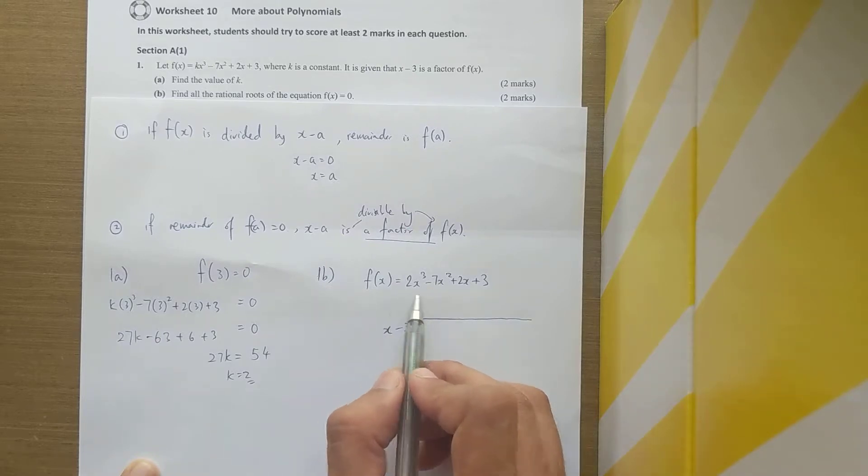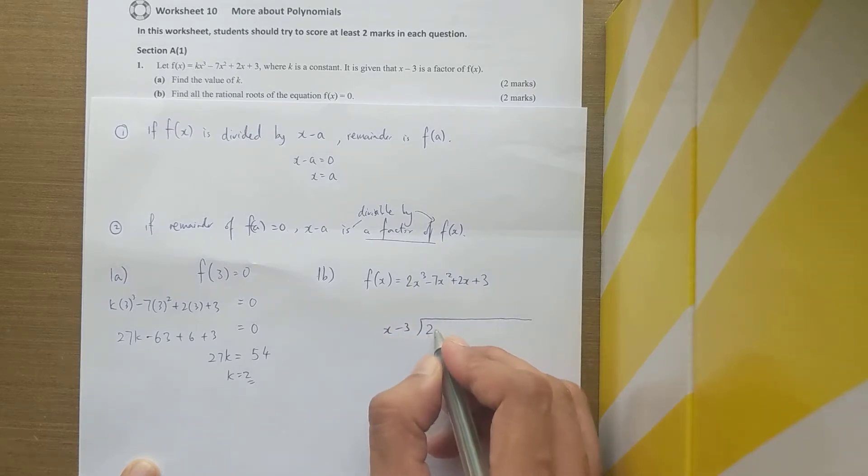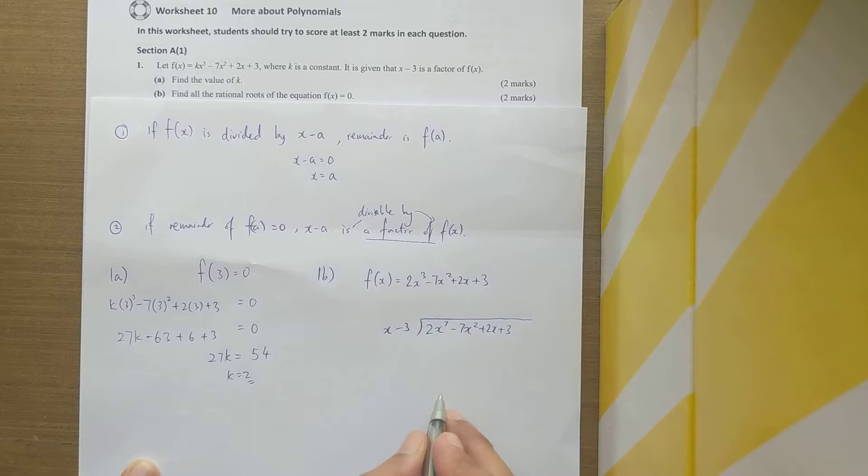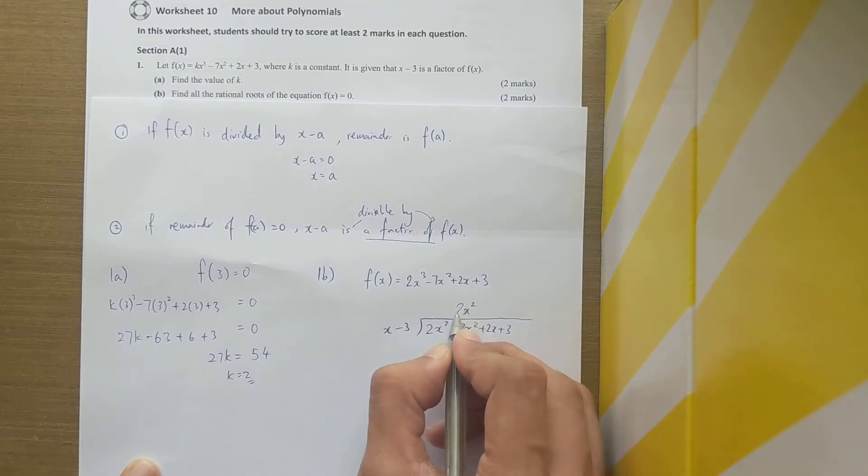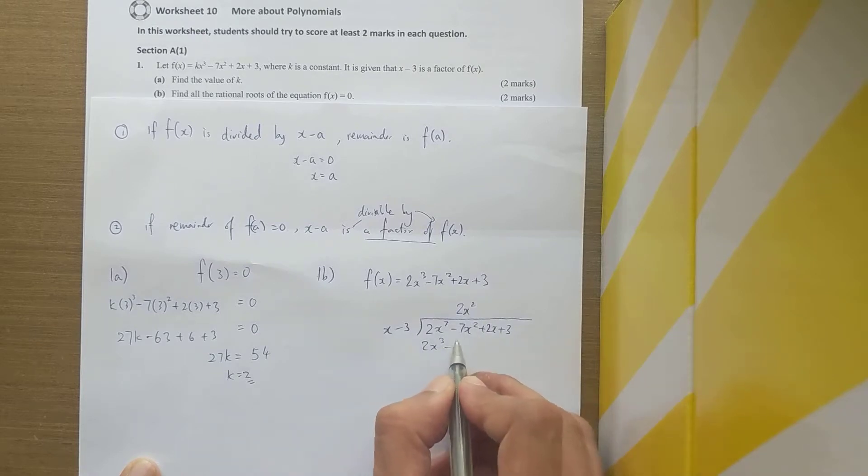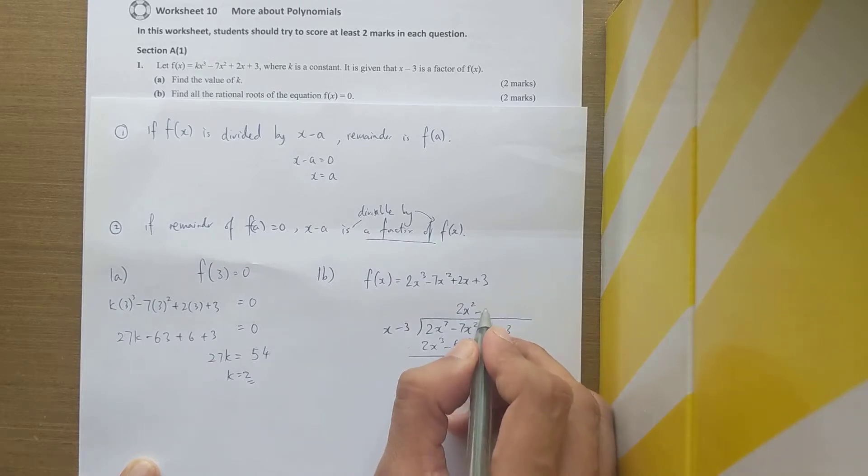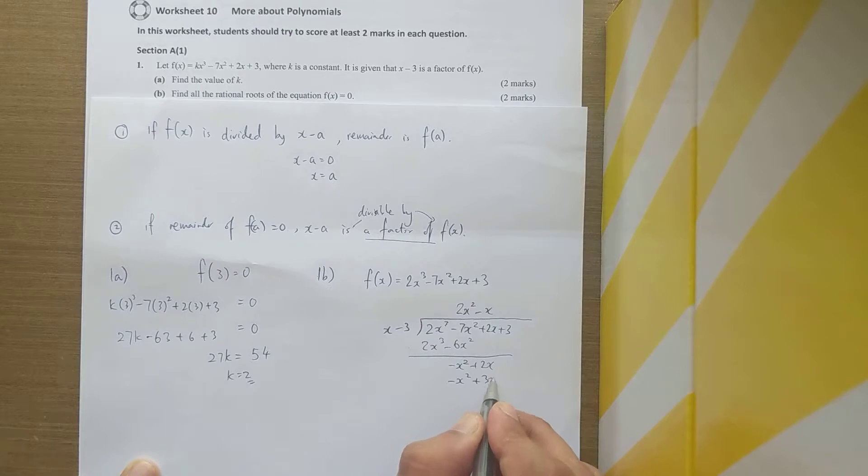You will use your first factor x minus 3 as the divisor, and the f(x) is your dividend. Then you're going to do your long division or short division as you prefer. x times 2x squared gives 2x cubed minus 6x squared. Negative 7 minus negative 6 is negative 1, so negative x squared. Then negative x times x minus 3. If you don't get a 0, you're doing something wrong, so do it once more.